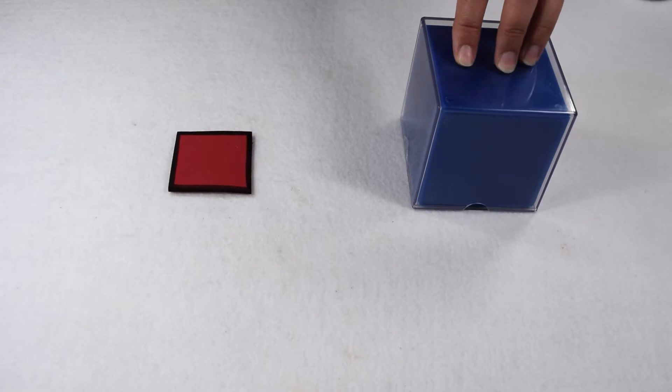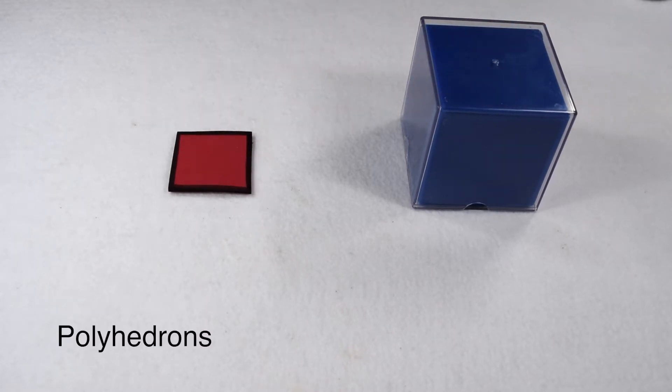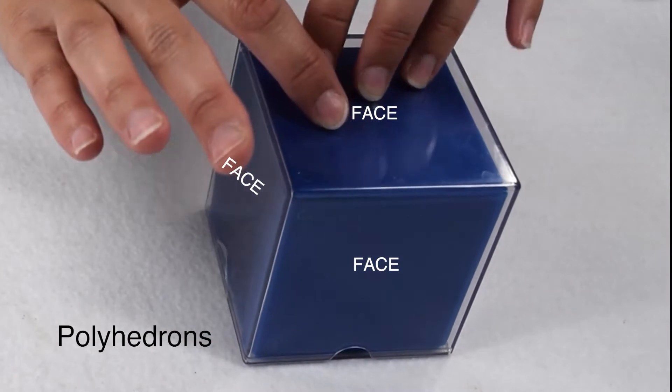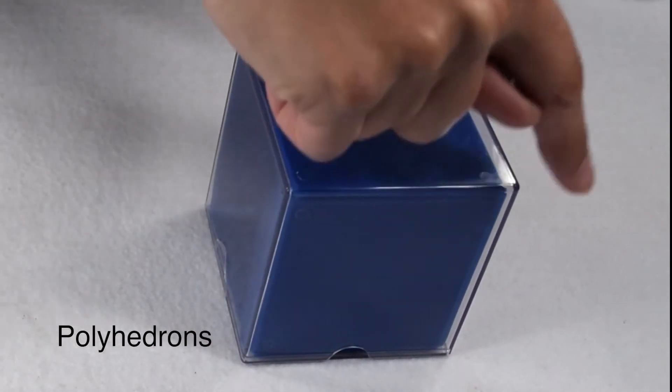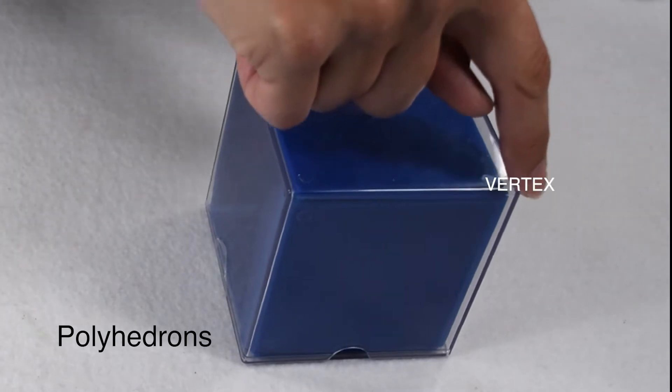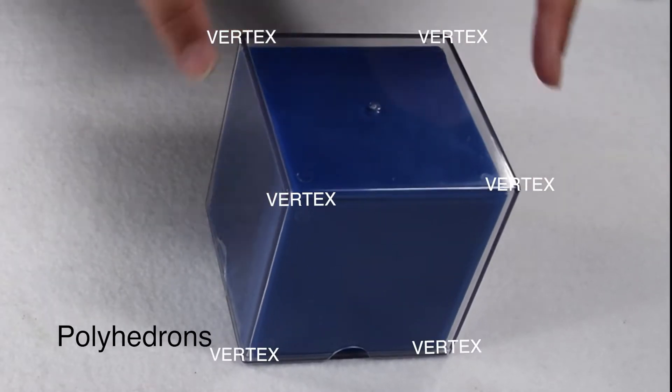Solid three-dimensional figures like this cube are called polyhedrons. Polyhedrons are made up of faces, which are our flat polygons, edges, which is where our faces meet, and vertices, otherwise known as corners, which is where our edges meet.